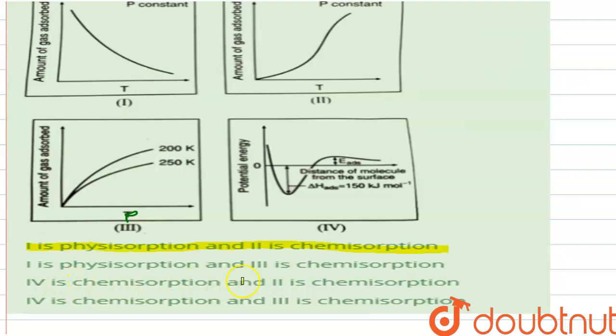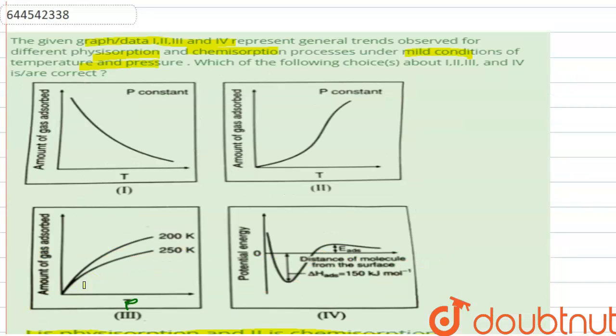The third option is four is chemisorption and two is chemisorption. This is the true option. This is a true statement. This is the correct option. The last is four is chemisorption and three is chemisorption. So this is a false statement. So we have only the first and the third option as our correct options.